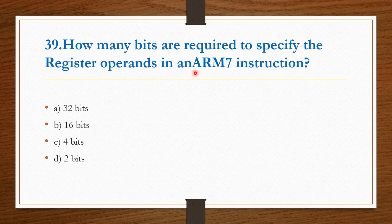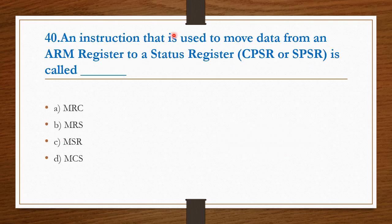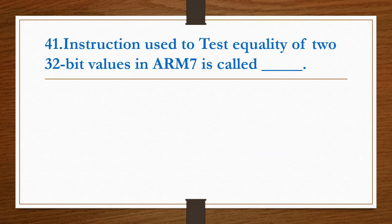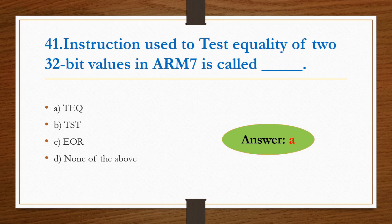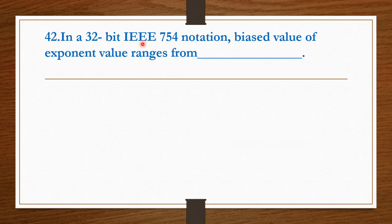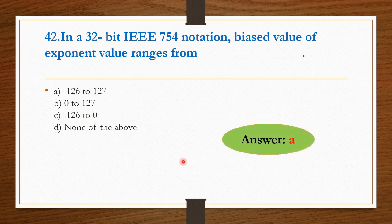How many bits are required to specify register operands in an ARM7 instruction? Four bits are required. Option C is the right answer. An instruction that is used to move data from ARM register to a status register is called MSR. Option C is the right answer. Next question. Instruction used to test equality of two 32-bit values in ARM7 is called TEQ. Option A is the right answer. In a 32-bit IEEE 754 notation, biased value of exponent value ranges from minus 126 to plus 127. Option A is the right answer.